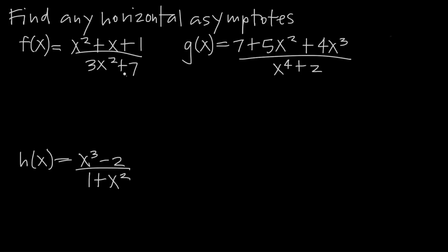Same thing in the denominator — we have 3x squared and a 7. The x squared term is a higher degree term than the constant. So we only want to look at the highest degree terms, and that's going to be the case for every rational function. Let's go ahead and circle those: x squared in the numerator and 3x squared in the denominator. Keep in mind that the highest degree term is not always going to be the first term.